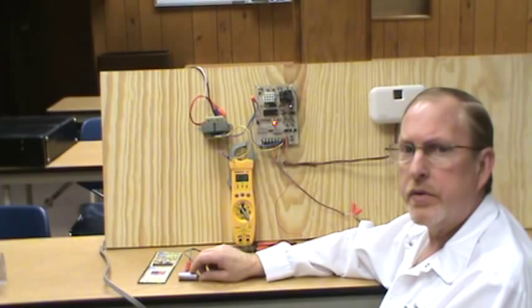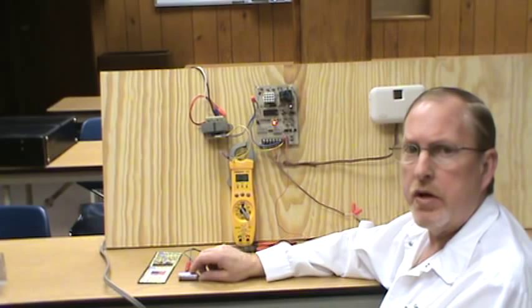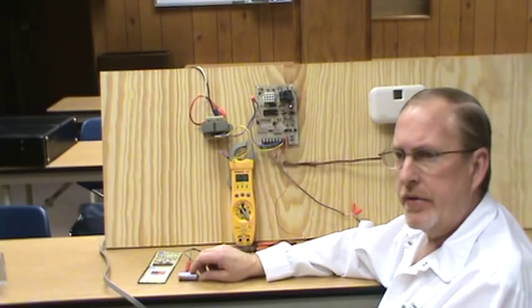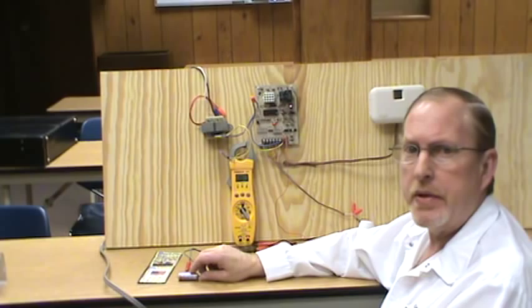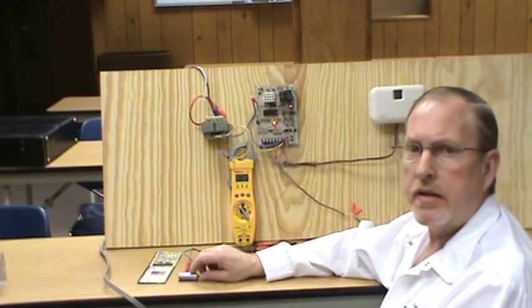Another method techs use is a manual reset type breaker with some leads on it where they jump out where the blown fuse was and start jumping out circuits until it pops the breaker. This is an alright method, although it can be time consuming, especially if you're outside trying to locate the short and it pops the breaker. You've got to constantly go back and forth to reset it.